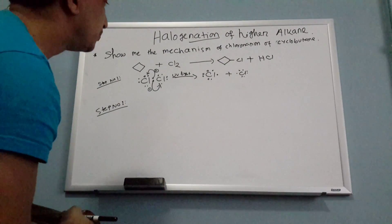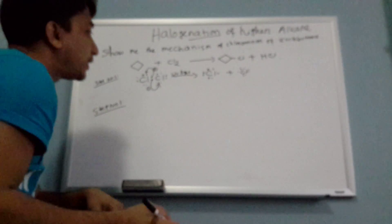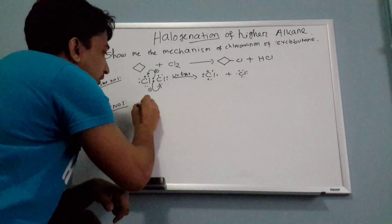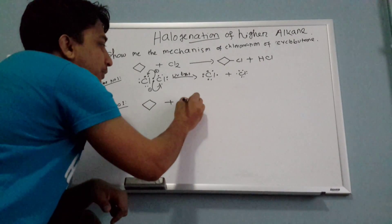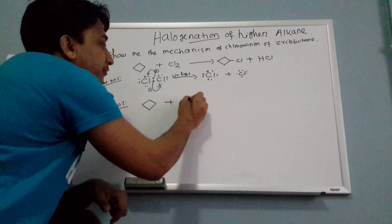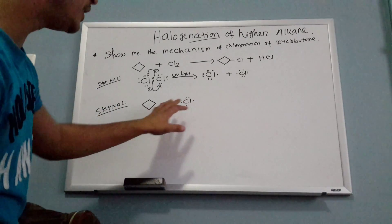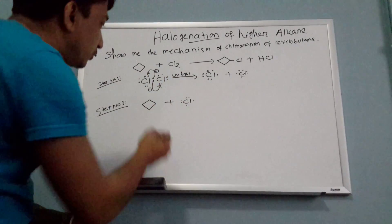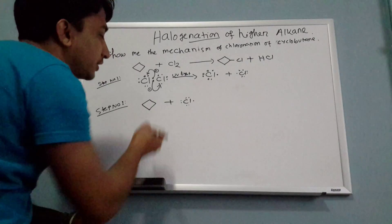Step number two: bring the cyclobutane. Cyclobutane is going to react with one free radical. The free radical attacks the alkane — any carbon you can attack because I haven't specified which one.